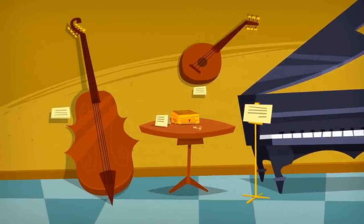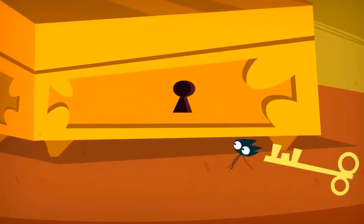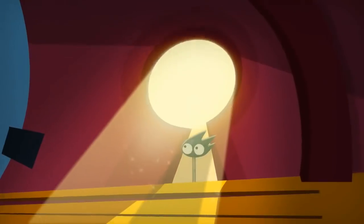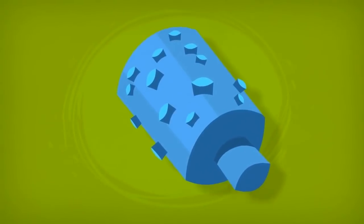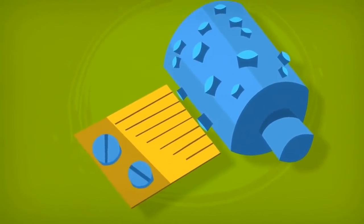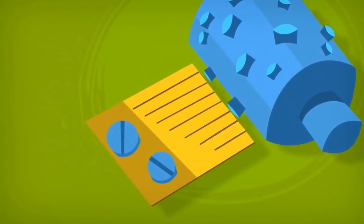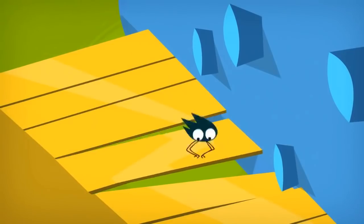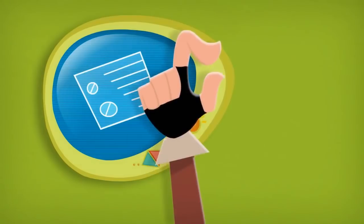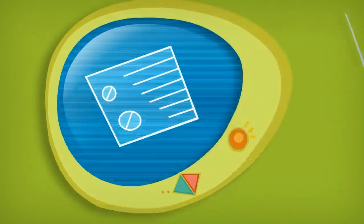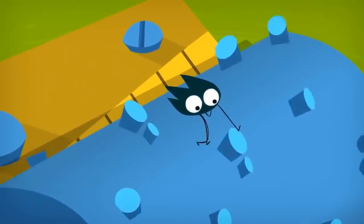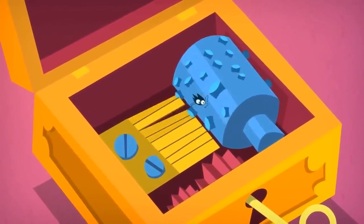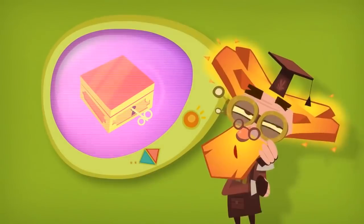Music boxes were invented more than two hundred years ago. Inside there is usually a cylinder with short pins sticking up from it. In front of the cylinder there is a comb with metal teeth of different lengths. If you pluck one of the teeth, it will make a pleasant sound. A short tooth makes a higher sound, and a long one lower. When the cylinder spins around, the pins pluck the different teeth, and music plays.